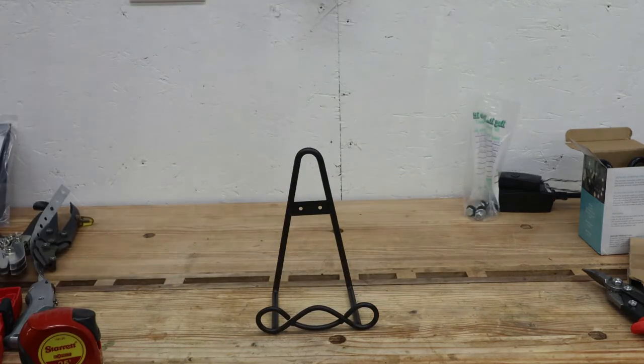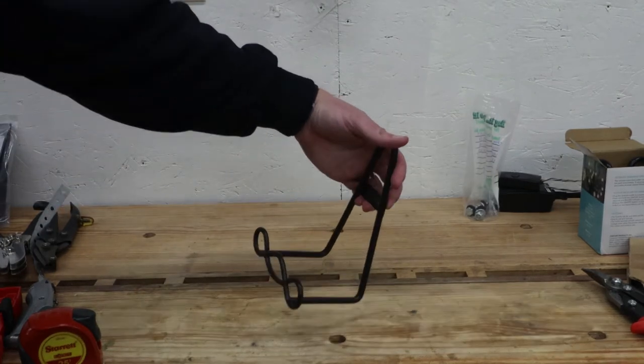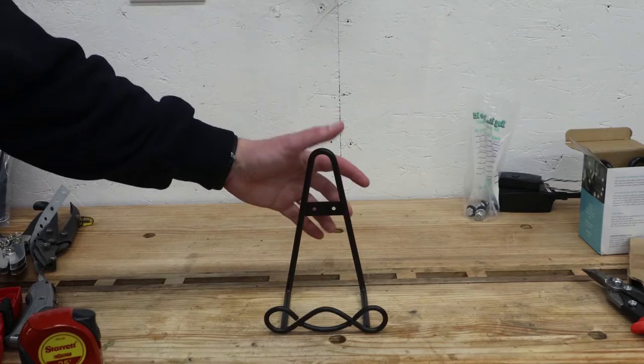If the plate is light enough, a drywall anchor may suffice. Or, if you have plastered walls, it's probably sufficient to just screw directly into the wood lath behind the plaster.